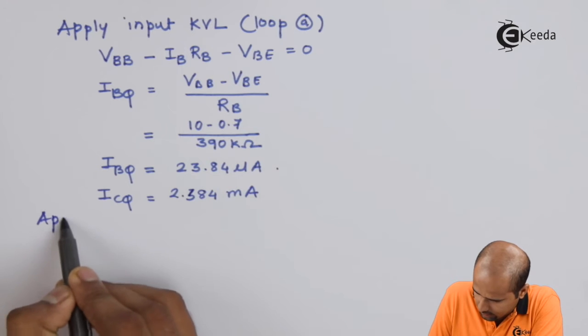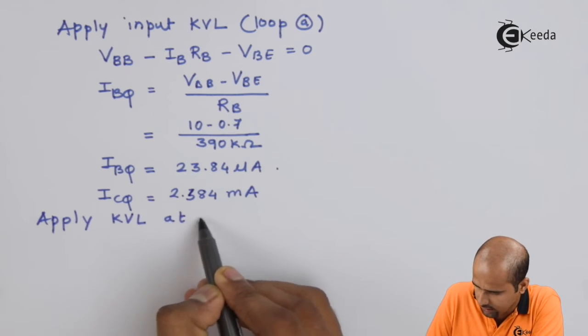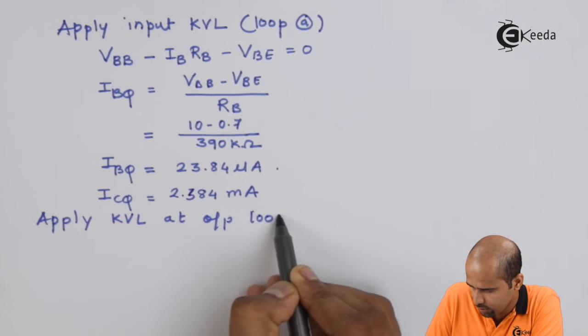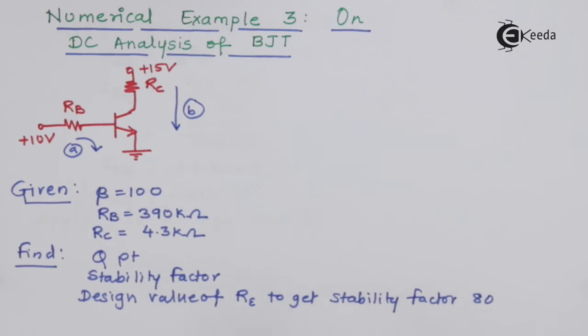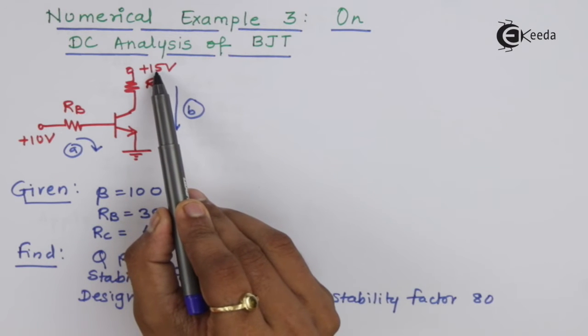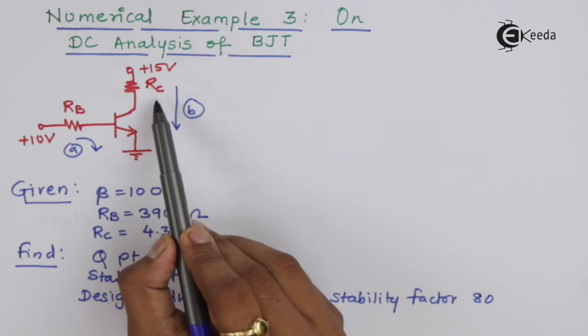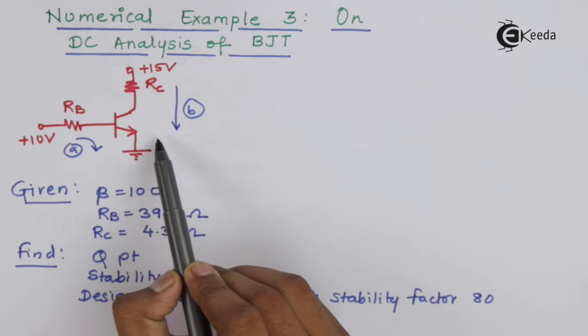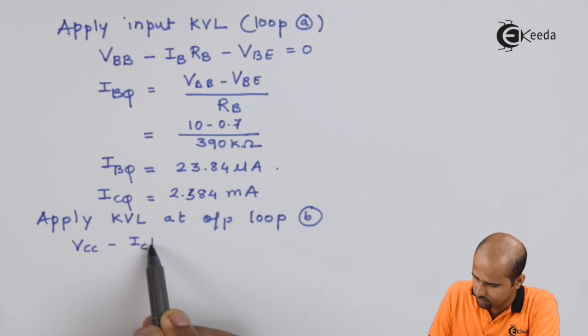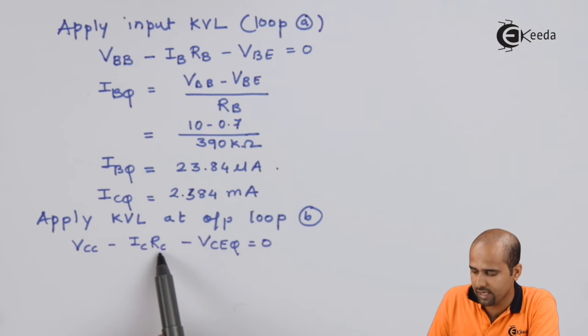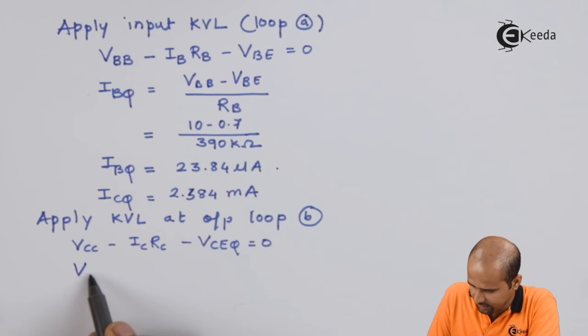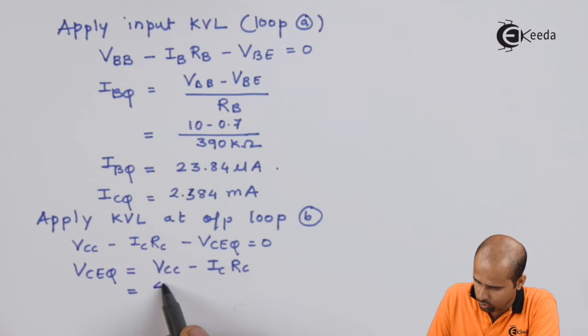Now applying KVL at output loop B. 15 volts minus IC times RC minus VCEQ equals 0. ICQ is 2.384 mA multiplied by RC which is 4.3k, so VCEQ equals 4.75 volts.